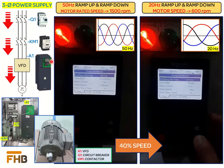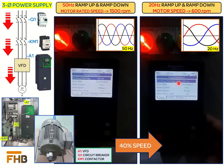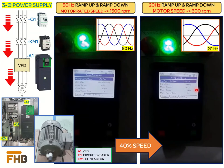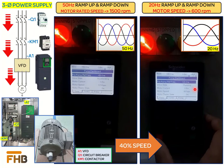In the demonstration, when the reference frequency is set at 50 Hz, the motor ramps up to the rated speed of 1500 rpm. However, when the reference frequency is set at 20 Hz — which is 40% of the rated frequency — the motor ramps up to 600 rpm, which is also 40% of the 1500 rpm rated speed.